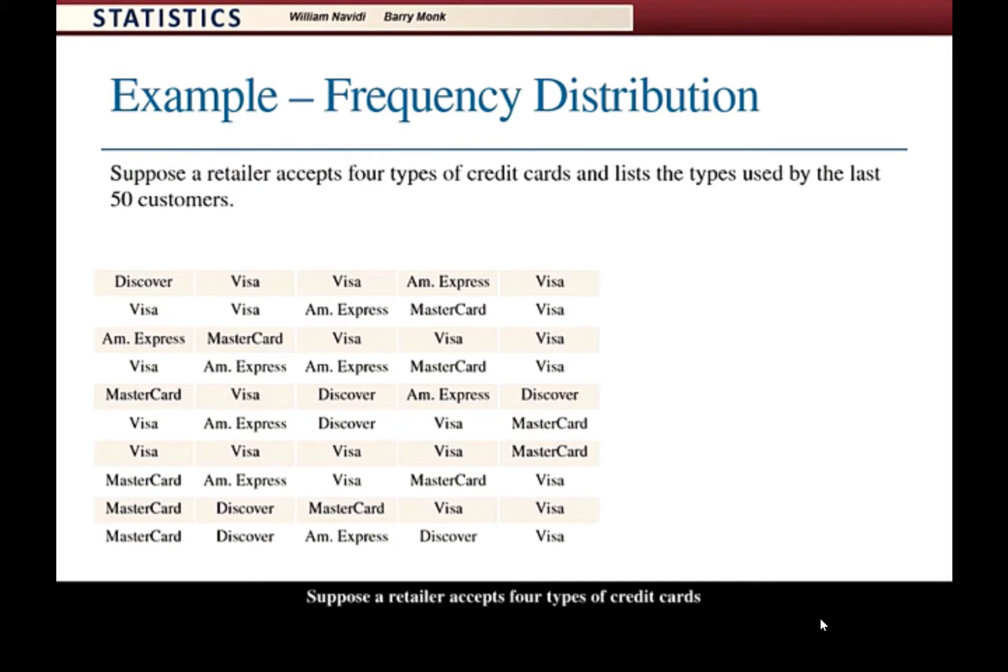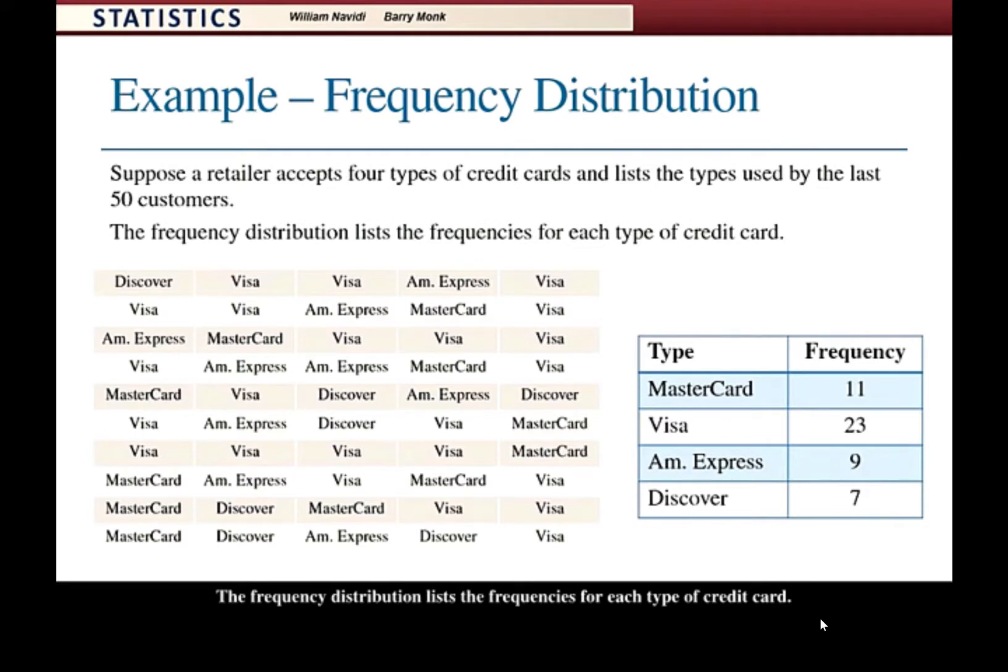Suppose a retailer accepts four types of credit cards and lists the types used by the last 50 customers. The frequency distribution lists the frequencies for each type of credit card.